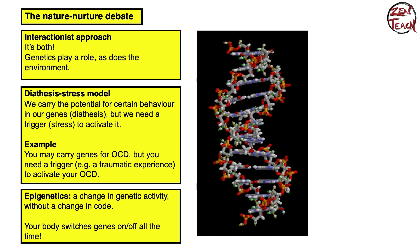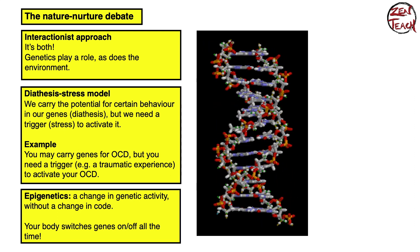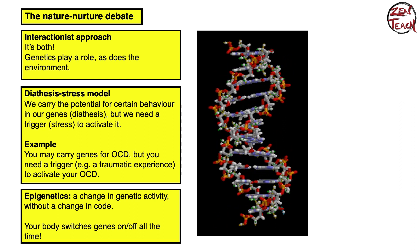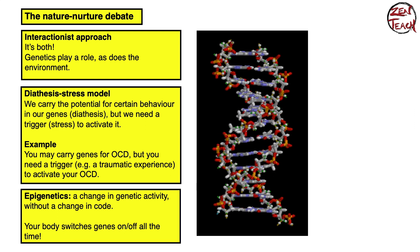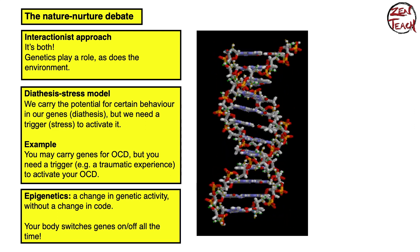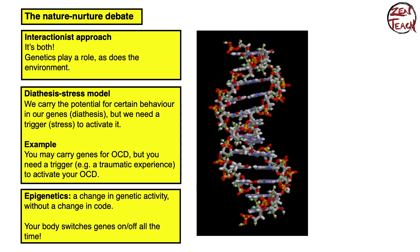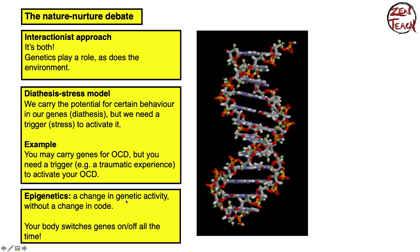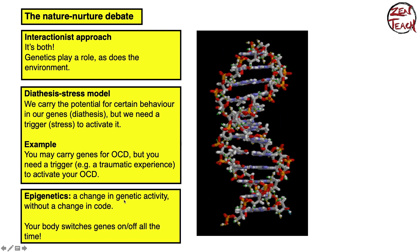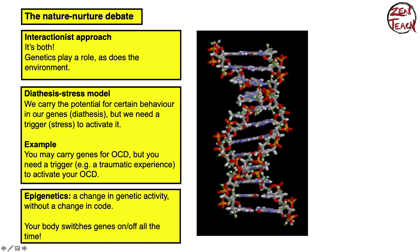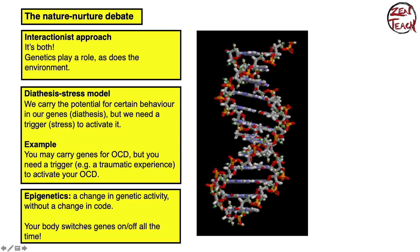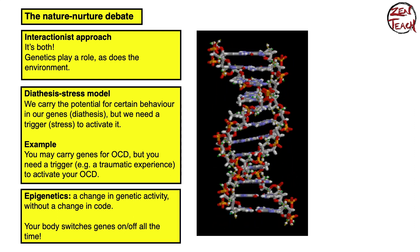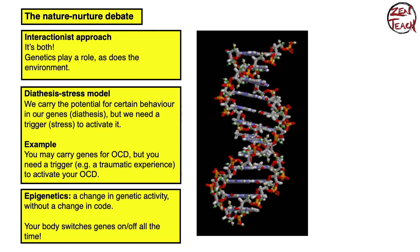An example of the diathesis stress model is OCD. You might carry a gene that makes you more likely to develop OCD in your life, but only a certain nurture factor — like a traumatic experience — could activate that gene. Just because you have a gene doesn't mean it is active. That is the idea behind epigenetics: your genetic activity — whether a gene turns on or off — depends on the environment and the experiences you have in the real world.